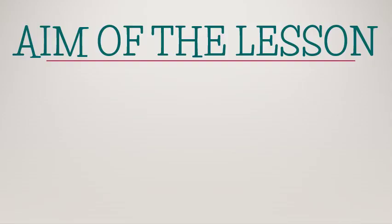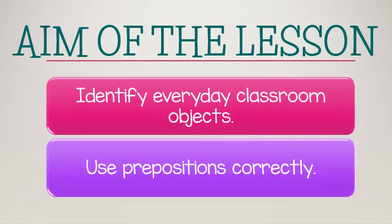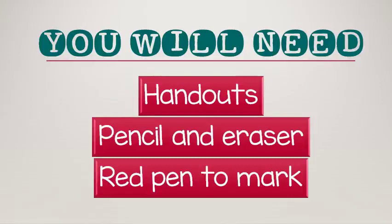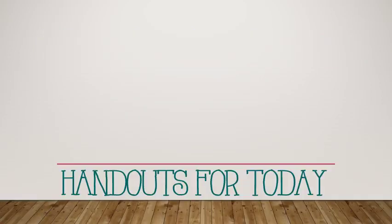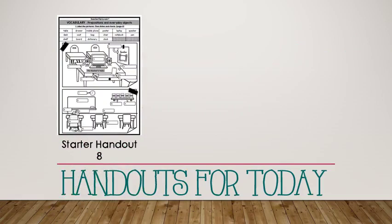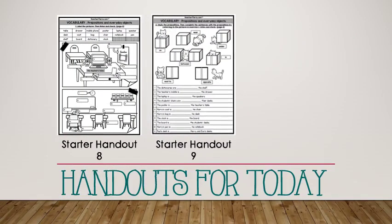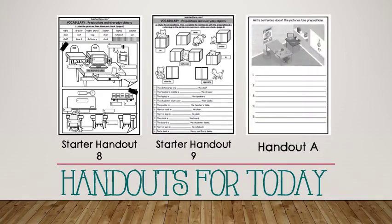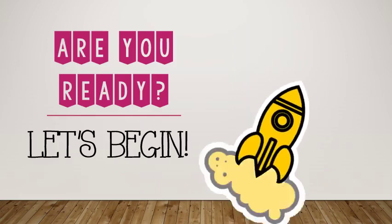Our aims for today's lesson are: identify everyday classroom objects and use prepositions correctly. For this lesson, you will need handouts, pencil and eraser, and a red pen for you to mark. Let's look at our handouts for today — Starter Handout 8 and Handout 9. Please make sure you have all three handouts before you continue. Are you ready? Let's begin.